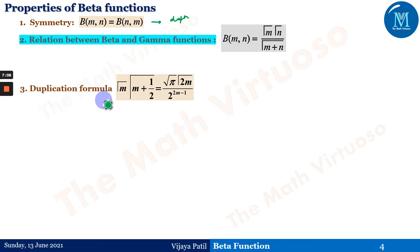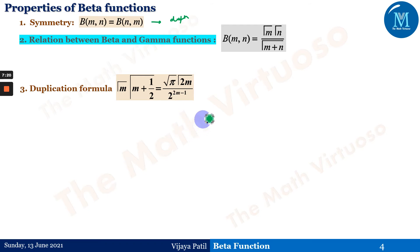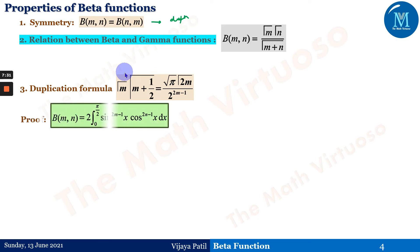Third is the duplication formula: Γ(m) · Γ(m + 1/2) = (√π · Γ(2m)) / 2^(2m-1). This is known as the duplication formula, and its proof is most often asked as an examination question. We'll now go through the proof using the definition.